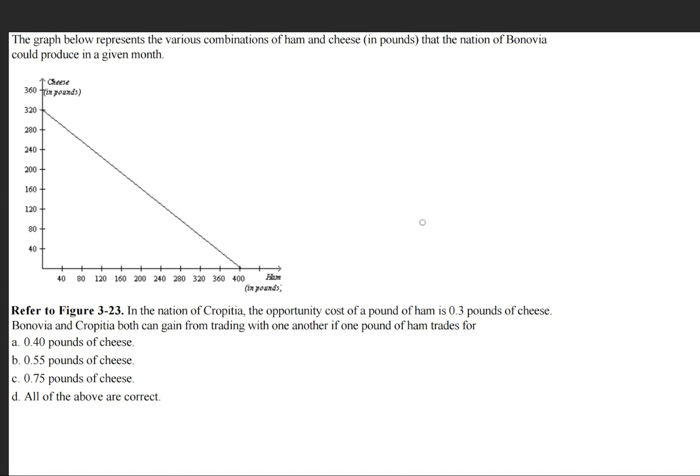Bonovia and Kropotia both can gain from trading with one another if one pound of ham trades for one of these values. So let's begin by finding who has the comparative advantage.